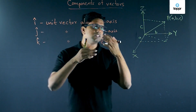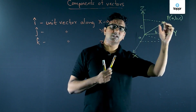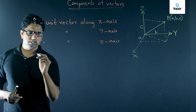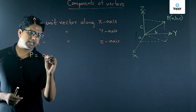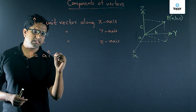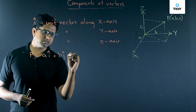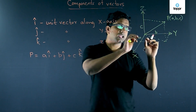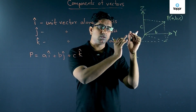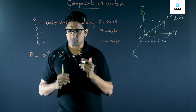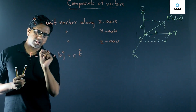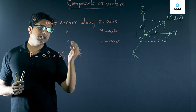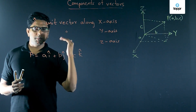Since we have the unit vectors along these three axes, point P can be written as a vector: P = a·î + b·ĵ + c·k̂, where î, ĵ, k̂ are the unit vectors. This is how we write a vector in components in three-dimensional space. The scalar components are a, b, c, and the vector components are aî, bĵ, and ck̂.